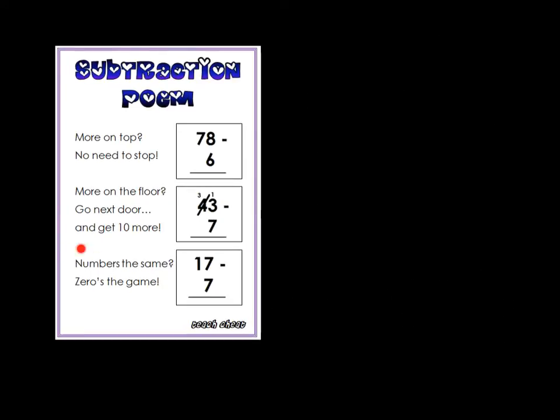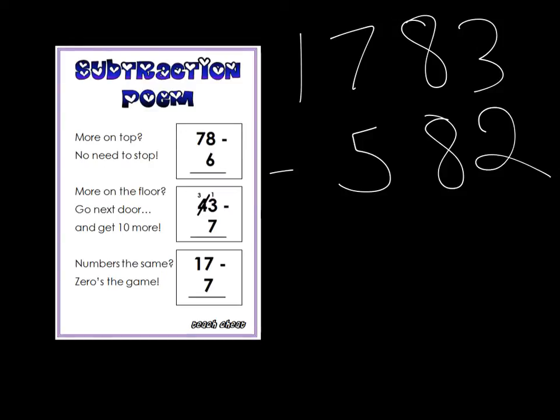Let's look at that final rule. Numbers are the same. Zero is the game. So I'm going to write out a question here. One thousand seven hundred and eighty-three. Take away five hundred and eighty-two.